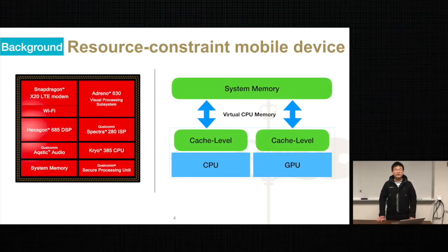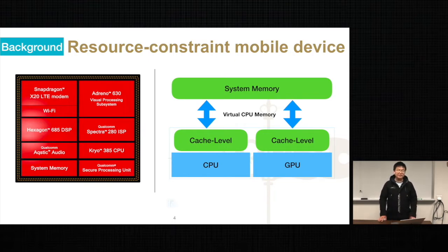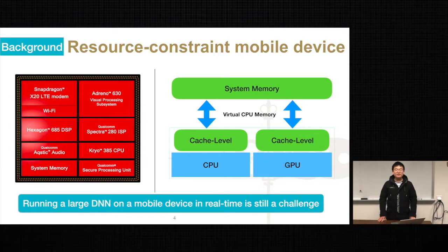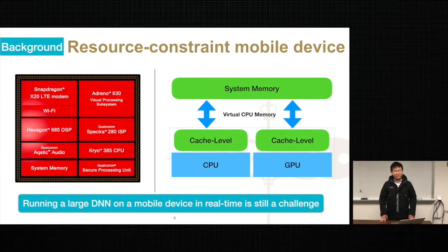On the other hand, the chips of mobile devices have become more and more powerful in the past decades. They usually have multiple processors with varied processing capabilities. We show a Snapdragon 845 example on this slide. Its CPU and GPU have their own hierarchical cache system, and they share the same system memory. However, running a large DNN on mobile devices in real-time is still challenging. Take VGG-16 as an example — it has more than 500 megabyte parameters, and TVM takes over 200 milliseconds to inference just one image, which is clearly far from real-time execution at 30 frames per second.